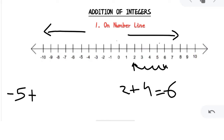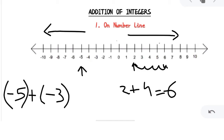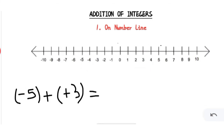Let's see one example: (-5) + (-3). Students, whenever we are writing negative integers it is preferred to use brackets so that it is very clear that this is a negative integer. So first we will see where minus 5 is, and then since minus 3 is to be added, we move towards the left three more steps — 1, 2, and 3 — so our answer will be minus 8.